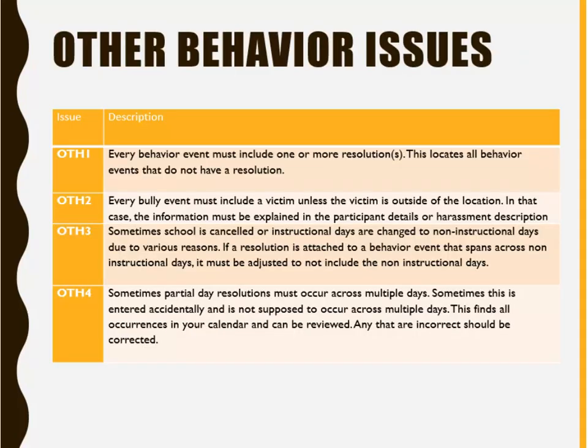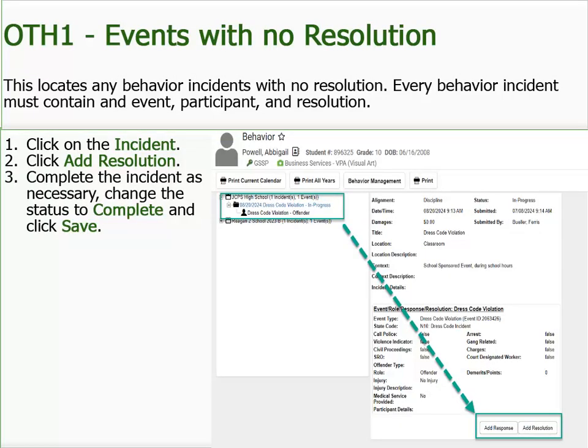Now we will discuss the remaining four behavior issues covered in this behavior cleanup report. The first one, Events with No Resolution, locates all behavior incidents where the resolution has not yet been added. Every behavior incident must contain an event, participant, and resolution. To correct it, click on the incident, click on Add Resolution, complete the incident as necessary, change the status to Complete, and click Save.